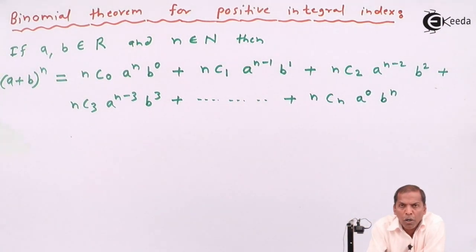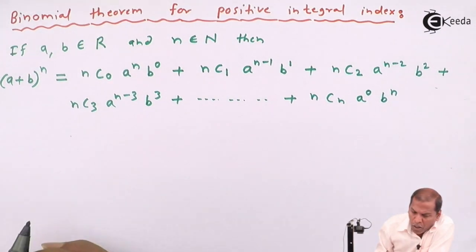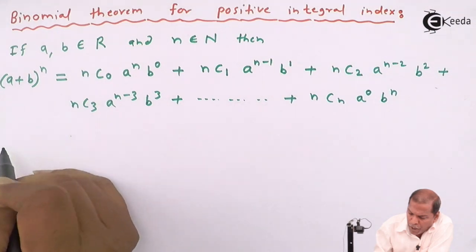So this is called the binomial theorem for positive integral indices. Now here we see a note.